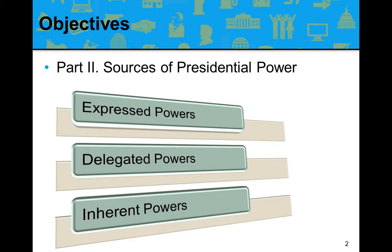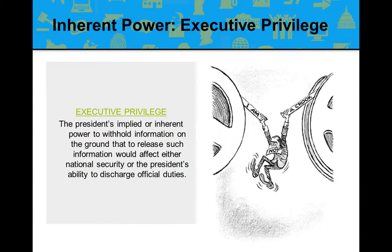We're going to skip down to the inherent powers. The most notorious inherent power is executive privilege — the president's implied or inherent power to withhold information on the grounds that releasing it would have some negligent effect on national security or on the president's ability to do his job.